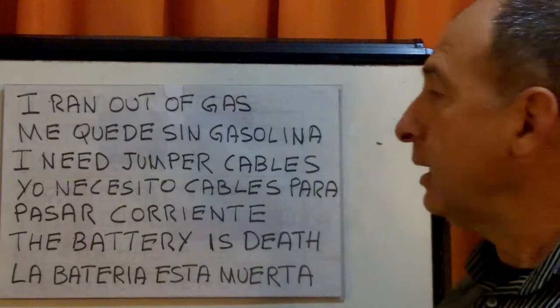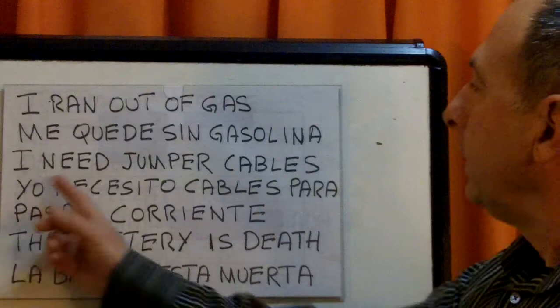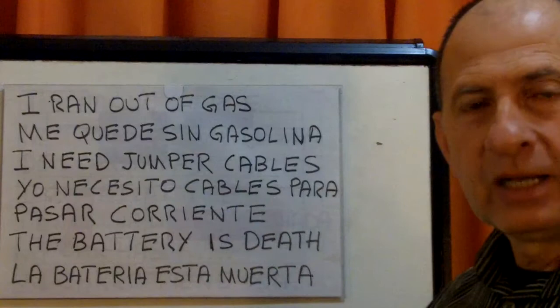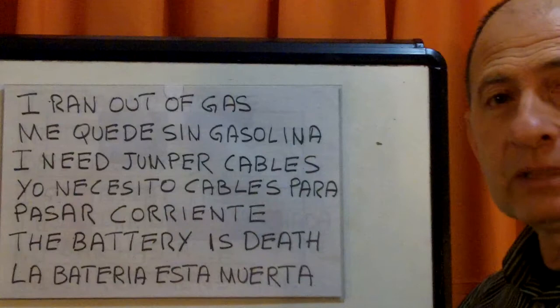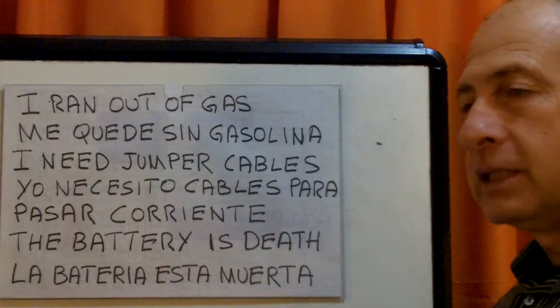Yo necesito dinero — I need money. Necesito agua — I need some water. So: yo necesito jumper cables — cables para pasar corriente. Practice this: cables para pasar corriente. Again, por favor: yo necesito cables para pasar corriente. Take your rhythm: yo necesito cables para pasar corriente.